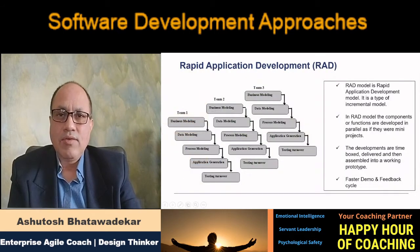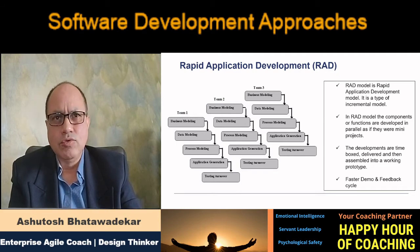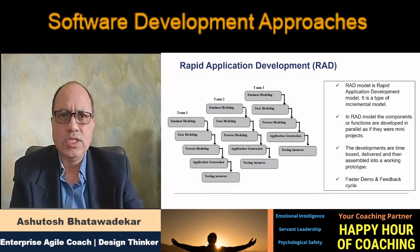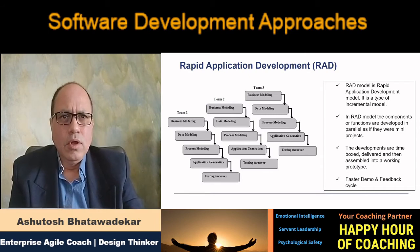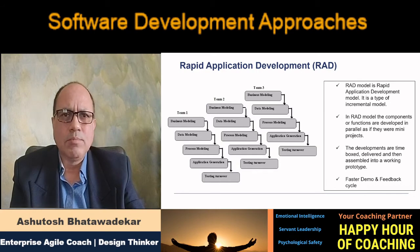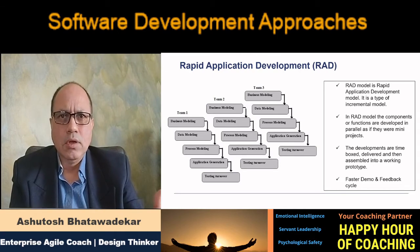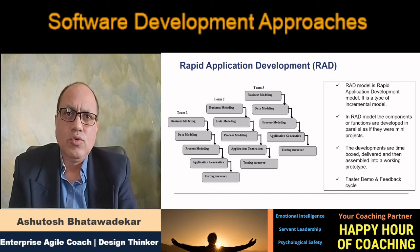Another interesting model is Rapid Application Development. As you can see in the picture, this approach is used where you can have independent teams working on a feature with suitable integration points and checkpoints between them. Take a smartphone as an example — one team works on the camera functionality, another on the calling feature, a third on connectivity features — three parallel tracks with integration checkpoints.